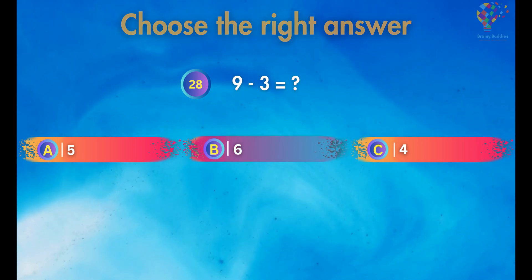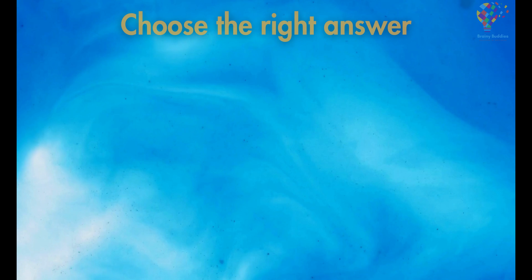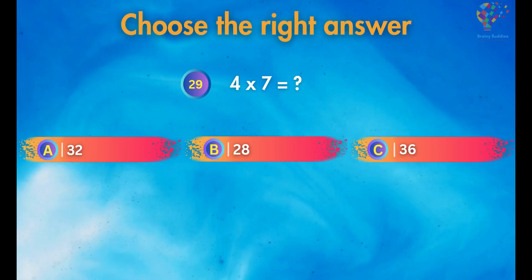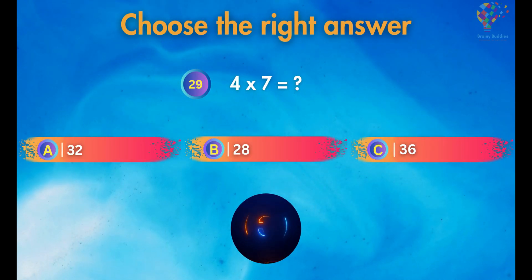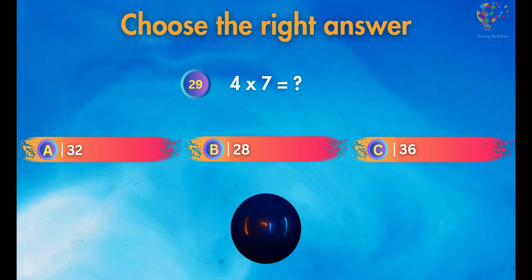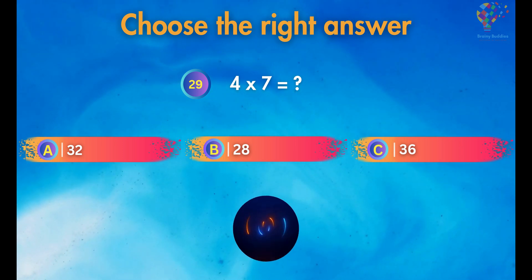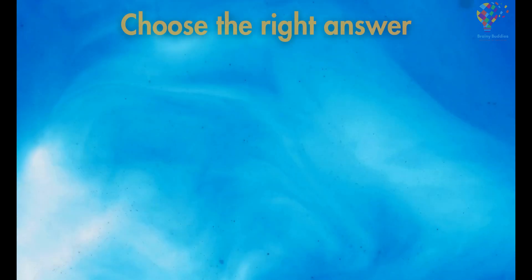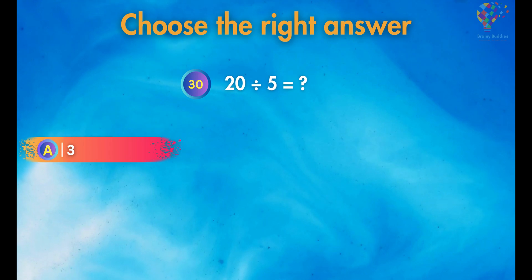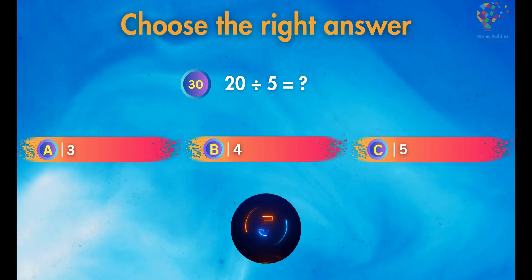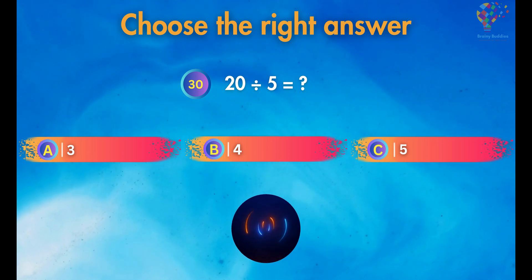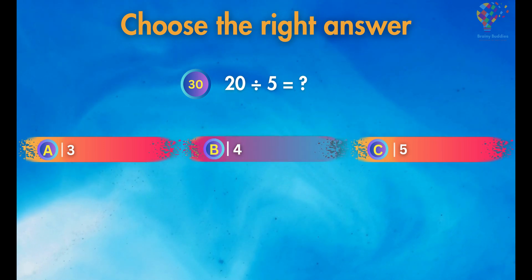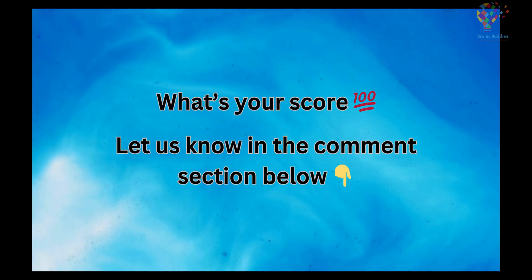equals 6. 4 times 7 is equal to 28. 20 divided by 5 equals 4. What is your score?